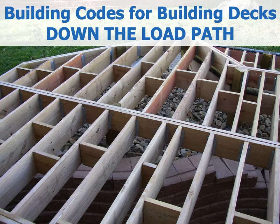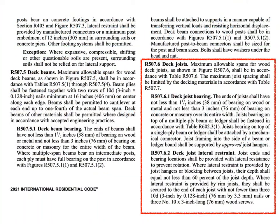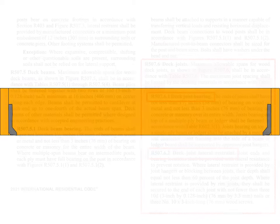Hello and welcome to Building Codes for Building Decks Down the Load Path. From the decking, the load transfers to and through the joists. Everything with deck joists basically starts in section R507.6, with more details in subsections about bearing and lateral restraint, plus a few other referenced tables and figures. I'm going to present it along the load path as we've been doing, from decking and now to joists.